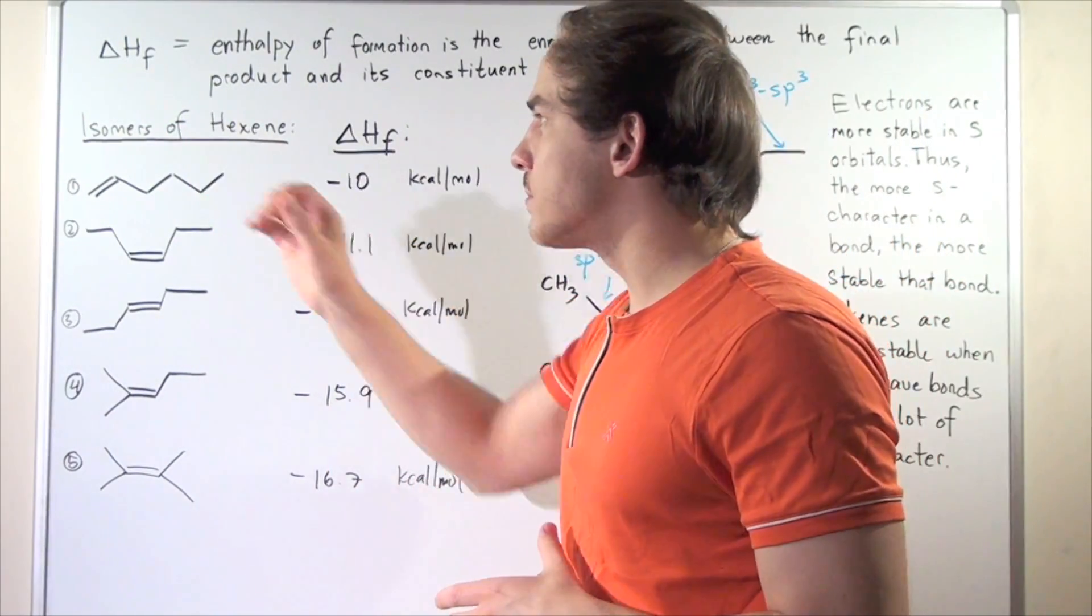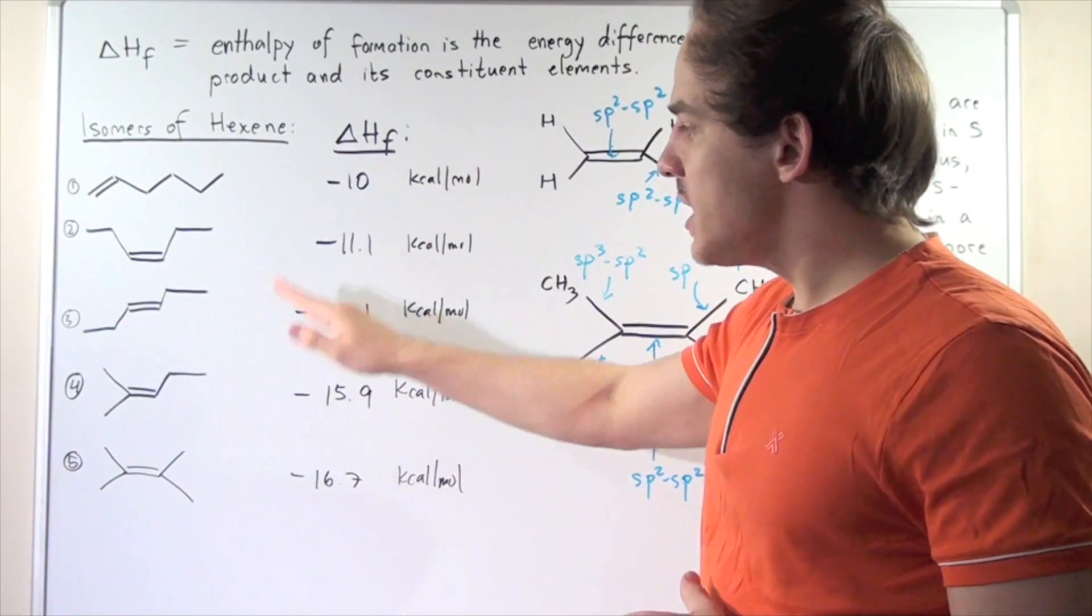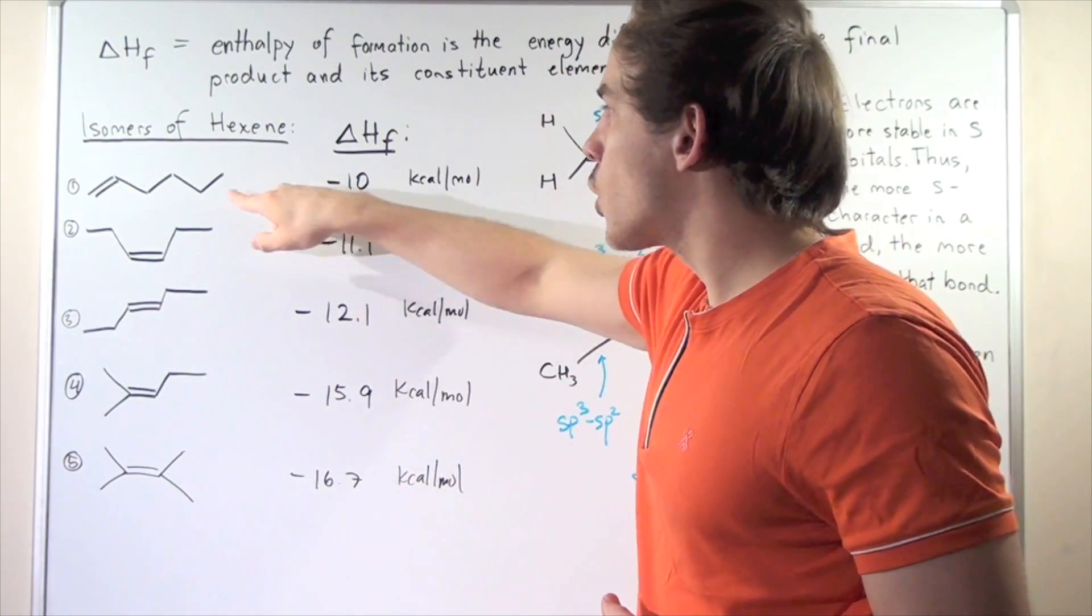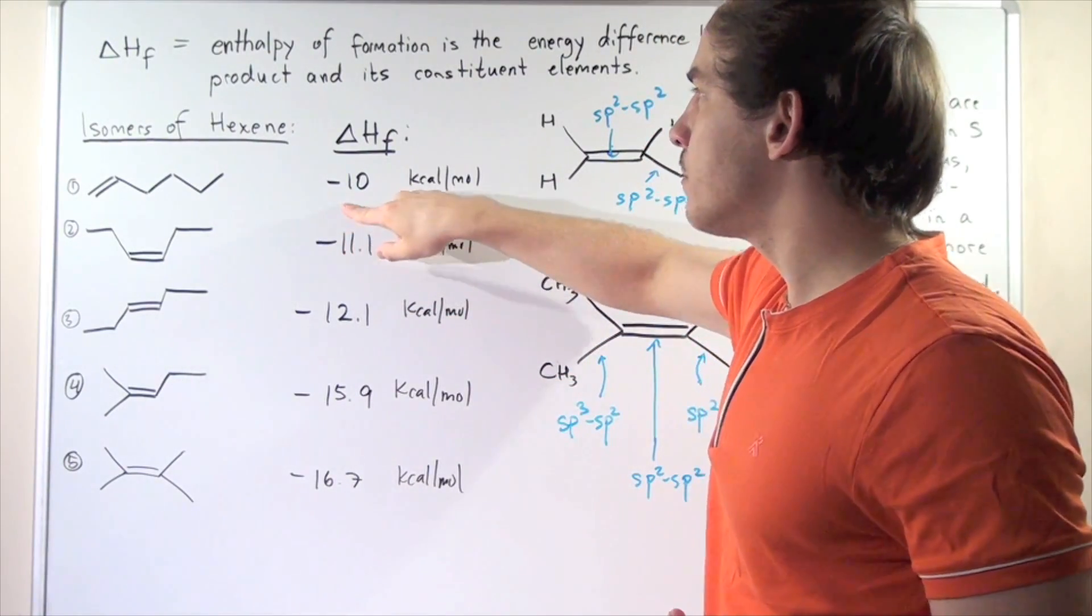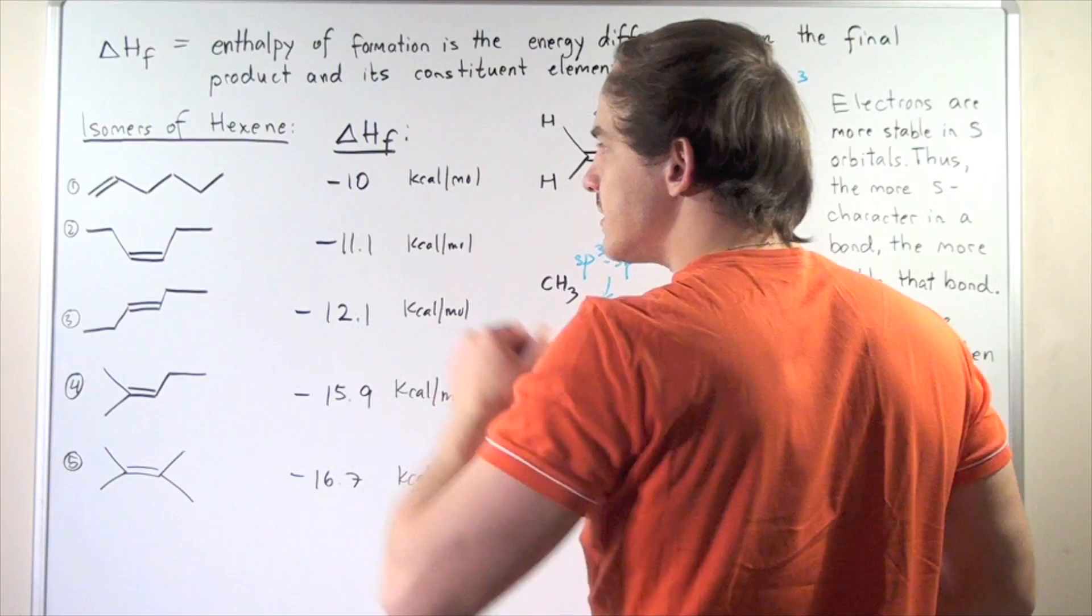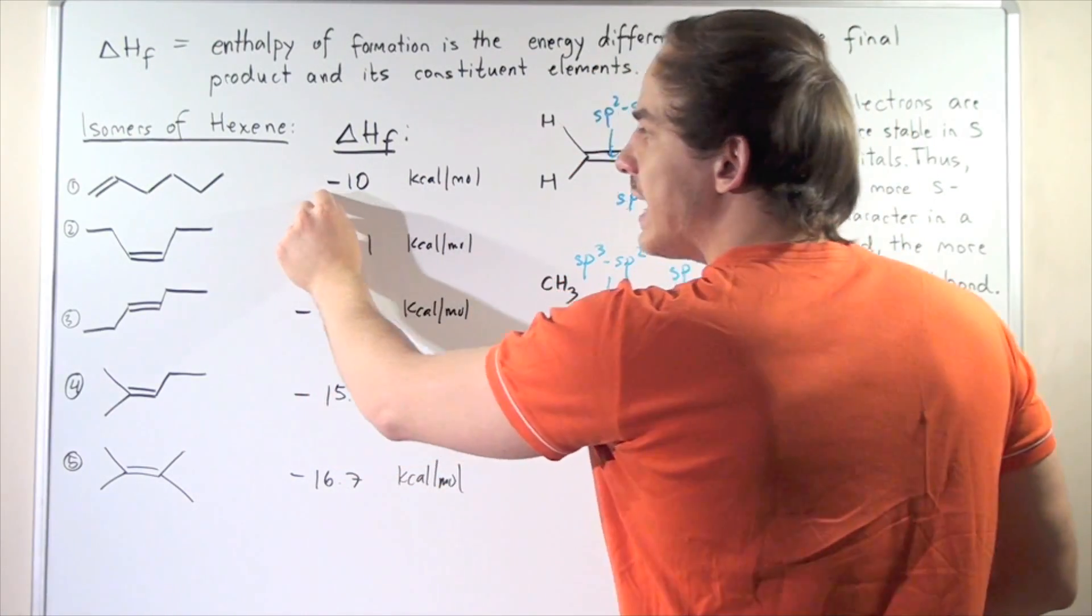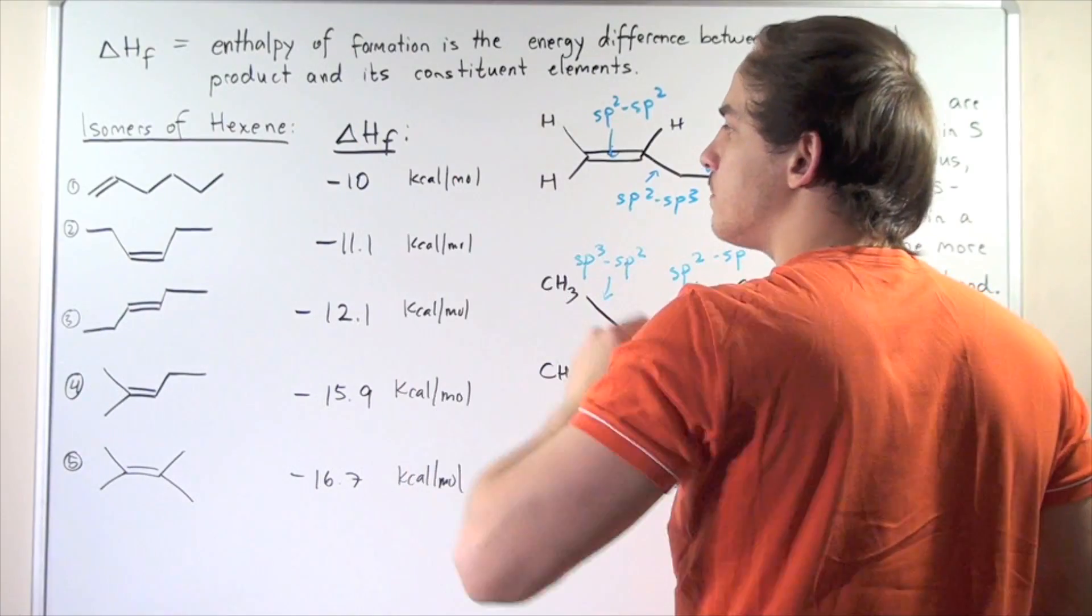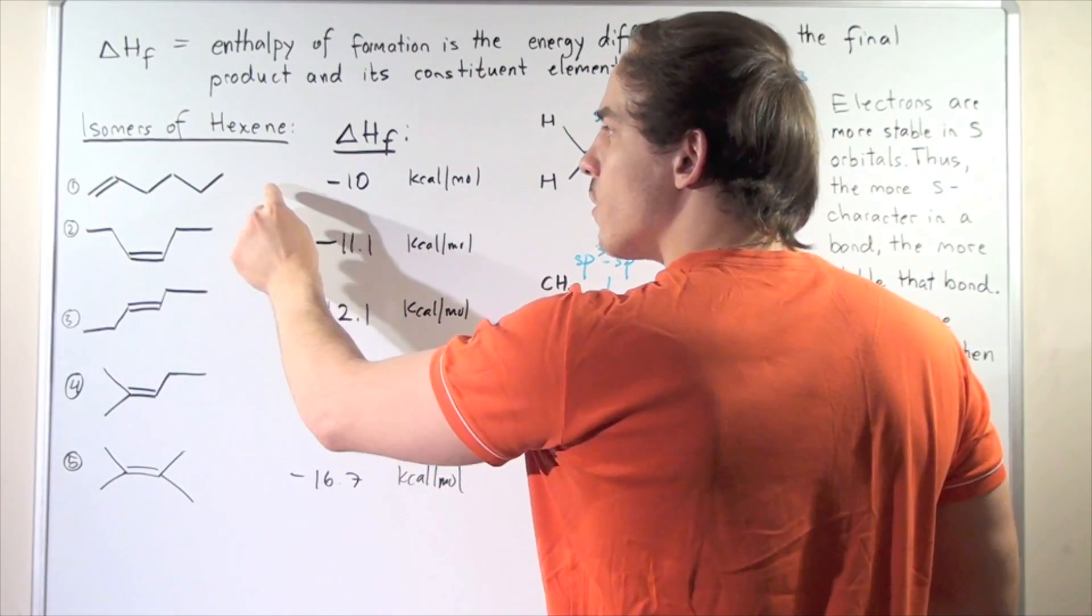So let's list a few isomers of hexene. So here I've listed five different isomers of hexene and each corresponding change in enthalpy of formation. So for example, for this isomer of hexene, we have negative 10 kilocalories per mole of change in enthalpy of formation.